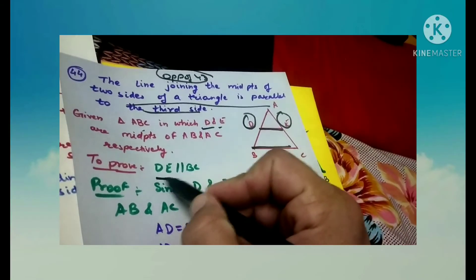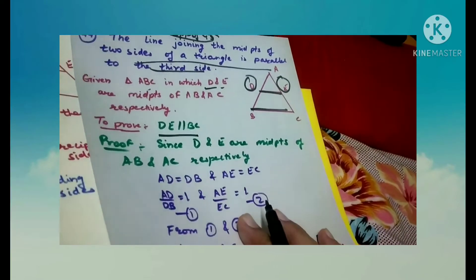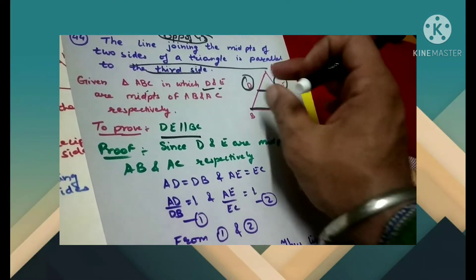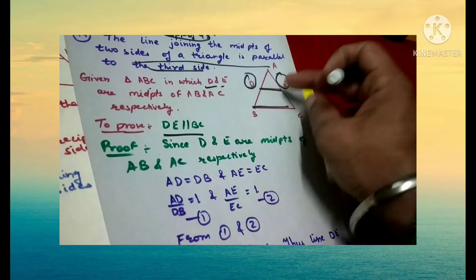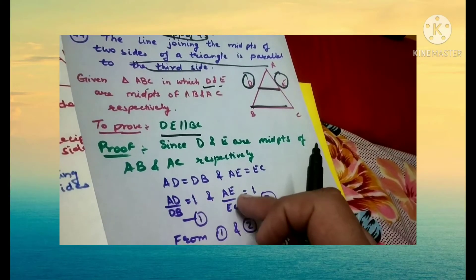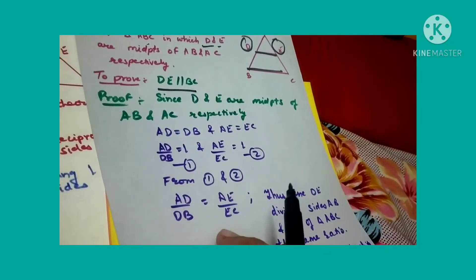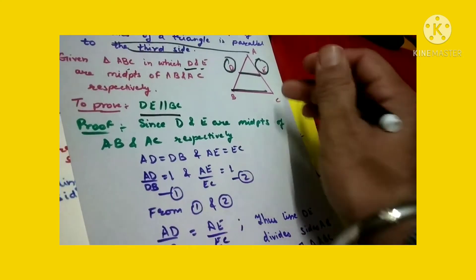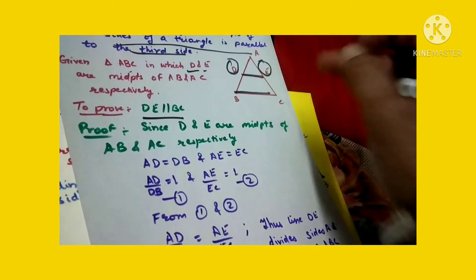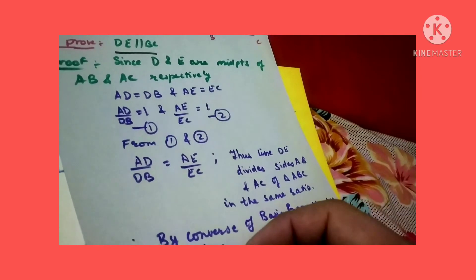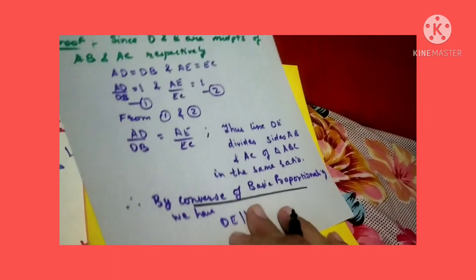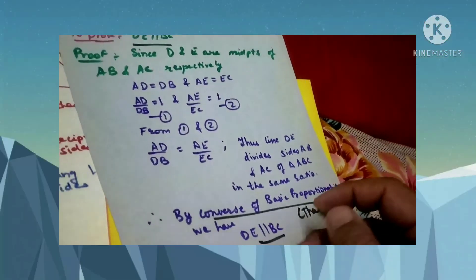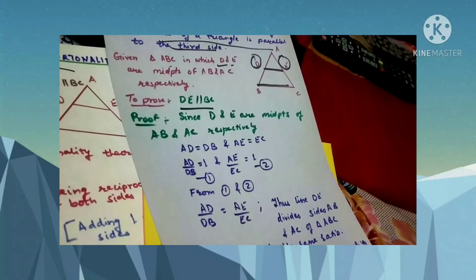Since D and E are midpoints, AD equals DB and AE equals EC. Therefore AD by DB equals 1 and AE by EC equals 1. From these two results, AD by DB equals AE by EC. According to the converse of the Basic Proportionality Theorem (Thales theorem), DE is parallel to BC.